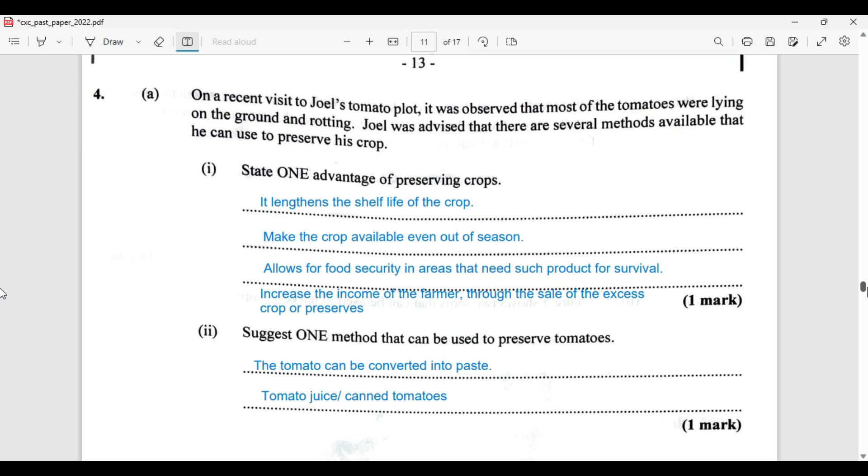State one method that can be used to preserve tomatoes. Tomatoes can be preserved by converting into tomato paste, tomato juice, or the tomatoes themselves can be canned as a fruit and be used.